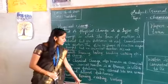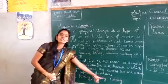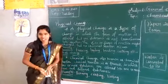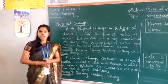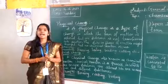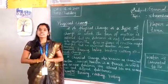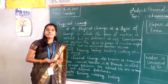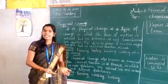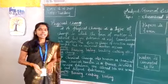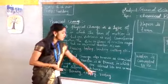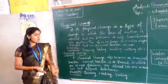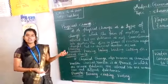For example, burning of paper — if you burn paper it becomes ash, and it totally changes into new substances. Cooking is also an example: rice becomes cooked food, which is entirely changed. Rusting of iron is also an example of chemical change.